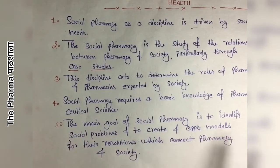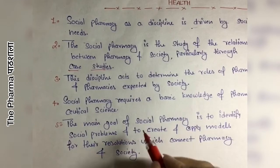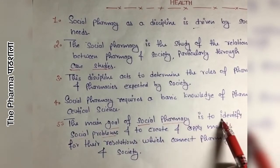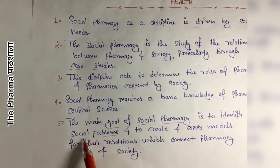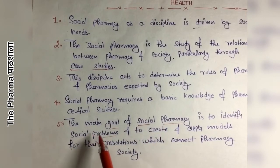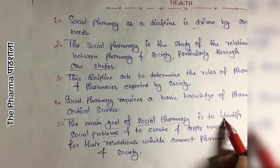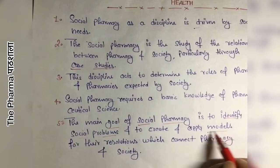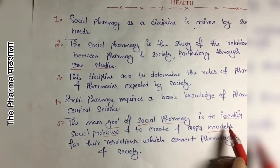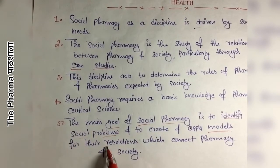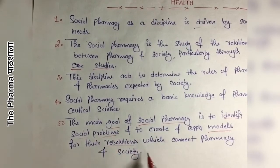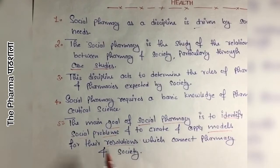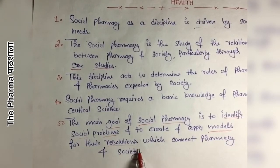The fifth point is that the main goal of social pharmacy is to identify social problems. The main aim of social pharmacy is to identify whatever social problems exist — related to medicine, disease, pharmacists, or any problem related to pharmacy — and to create and apply models for their resolution. After identifying the problems, we need to create techniques, models, rules, and regulations, and then apply them so that those social problems are resolved. And through this, a good connection between pharmacy and society is developed. So the main goal of social pharmacy is to identify social problems and to create and apply models for their resolution, which connect pharmacy and society.